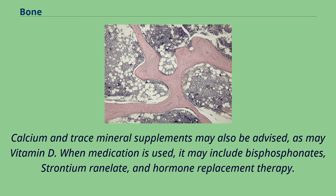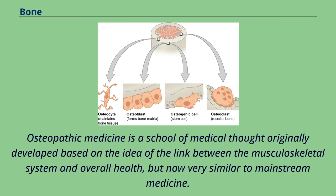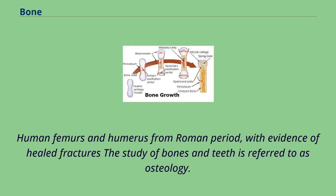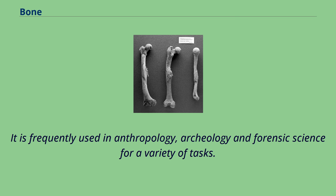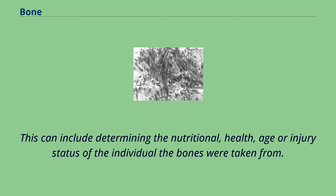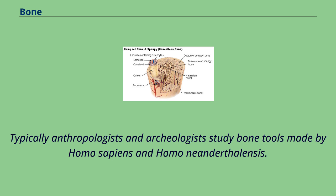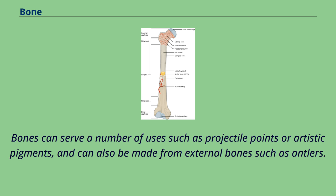Osteopathic medicine is a school of medical thought originally developed based on the idea of the link between the musculoskeletal system and overall health, but now very similar to mainstream medicine. As of 2012, over 77,000 physicians in the United States are trained in osteopathic medical schools. The study of bones and teeth is referred to as osteology. It is frequently used in anthropology, archaeology, and forensic science for determining the nutritional, health, age, or injury status of the individual the bones were taken from. Typically, anthropologists and archaeologists study bone tools made by Homo sapiens and Homo neanderthalensis. Bones can serve a number of uses such as projectile points or artistic pigments, and can also be made from external bones such as antlers.